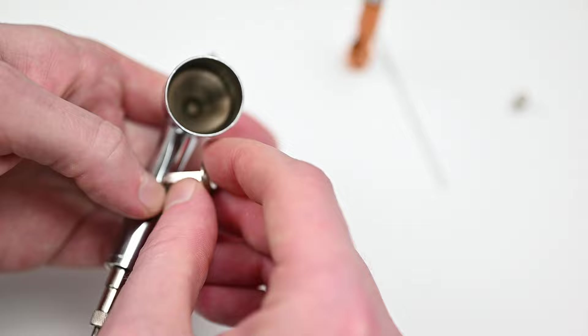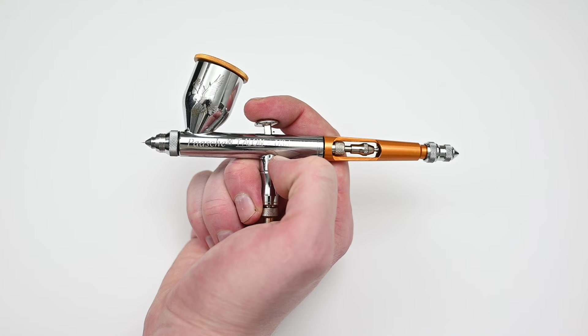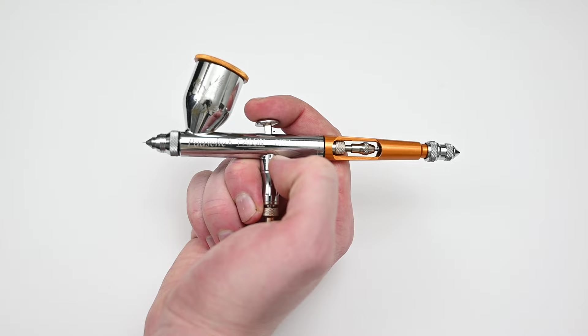So that's as far as I'm going to go with this breakdown. You can, of course, unscrew the air piston assembly at the bottom of the airbrush. And also inside the body, you have a PTFE seal in there if you need to adjust that to give a better seal around your needle.